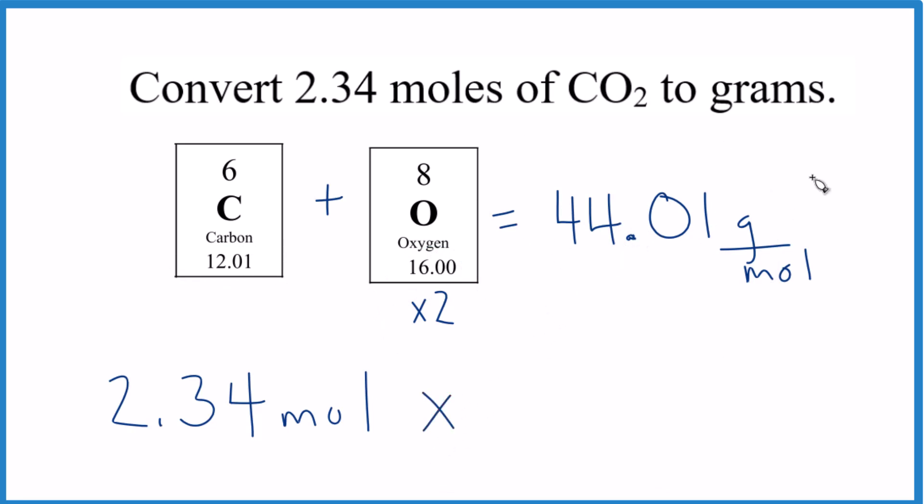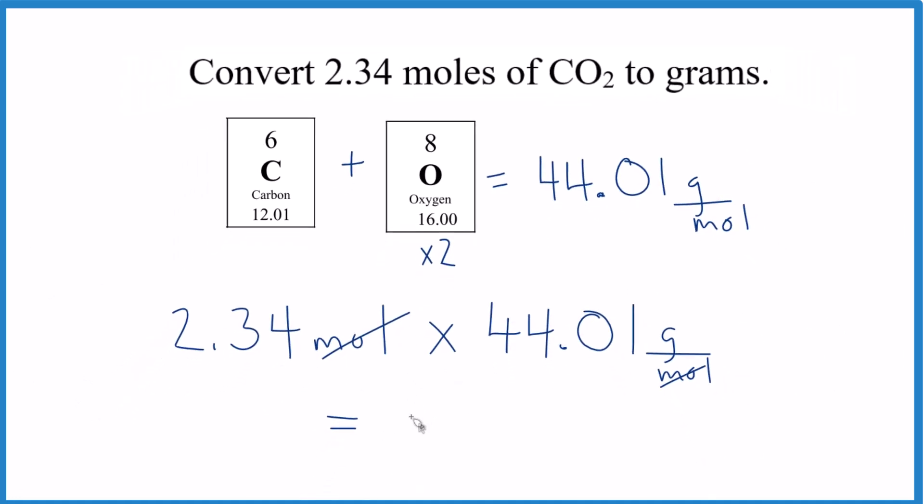So we're multiplying by the molar mass. And when we multiply, moles on top and the bottom, they cancel out. We're left with 103.0, the unit grams. And since we only have three significant figures here, 103 might be a better answer. We'll go with this for now.